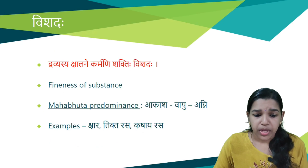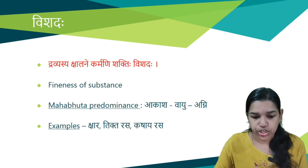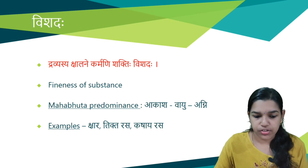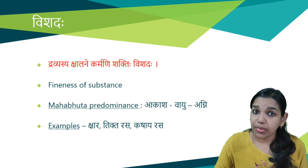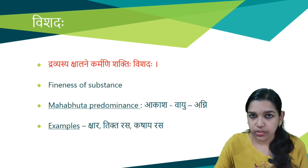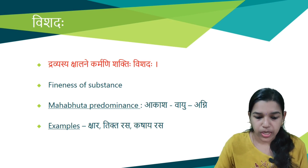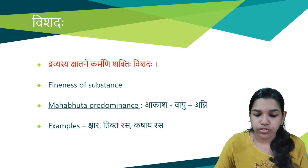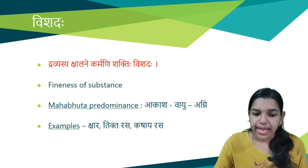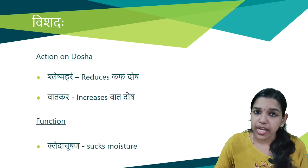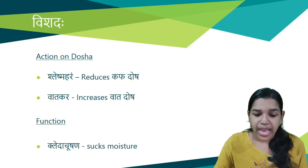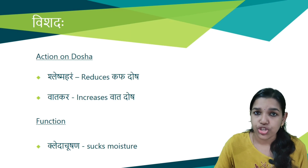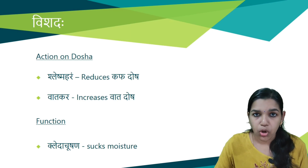Next is Vishadha guna. Dravyasya kshalane karmani shakti vishadha. That is the fineness of a substance is called Vishadha. Akasha, Vayu, and Agni are the predominant Mahabhudas. Examples are kshara, tikta rasa, and kashaya rasa. The actions carried out are Shleshma hara, that is reduces kapha dosha, and vata kara, that is increases vata dosha. The other function is kleta chushana, that is it helps in sucking the moisture.